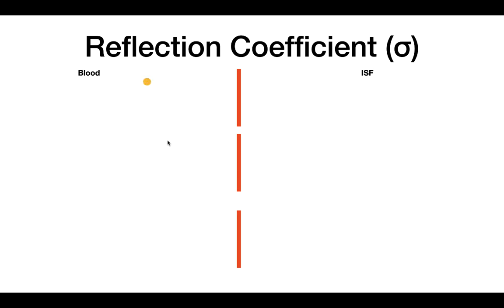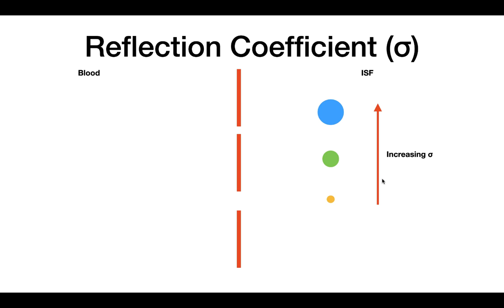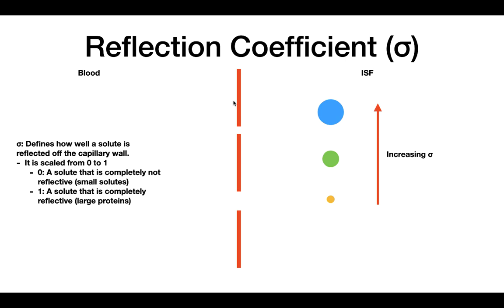This particle is so small that it can actually pass through the first gap junction. So if we were to compare all of these particles together, what you would see is that the largest particle is able to reflect best — in other words, it has the highest reflection coefficient. So the reflection coefficient increases from the smallest particle to the largest particle.